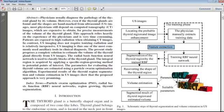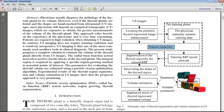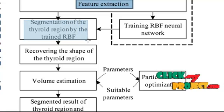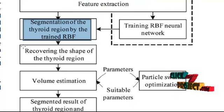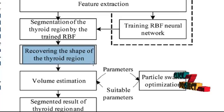These normalized features are then used as training vectors for the RBF neural network. The RBF neural network classifies each block into thyroid or non-thyroid gland. The convex hull concept is then used for shape recovery of the thyroid region.